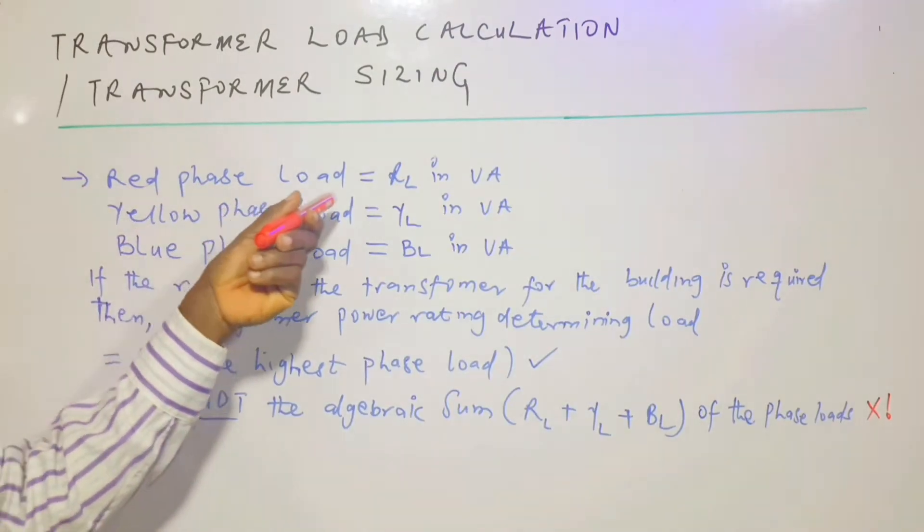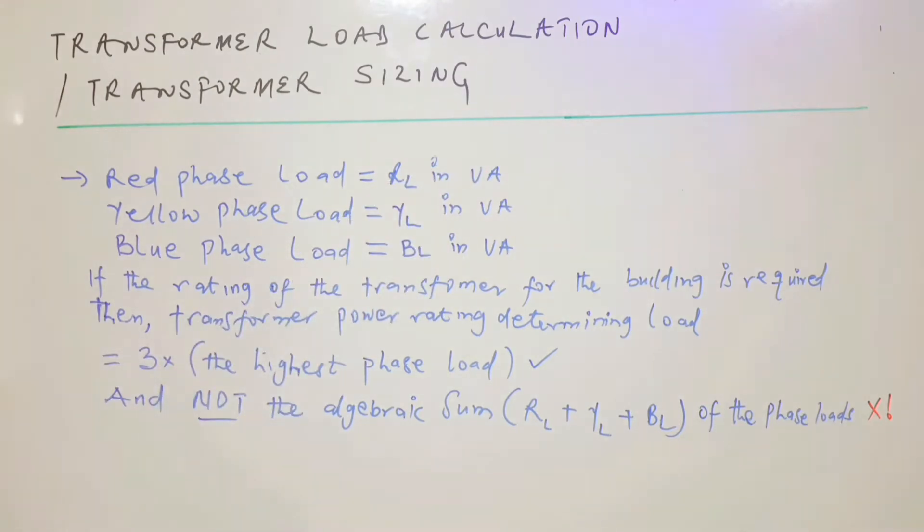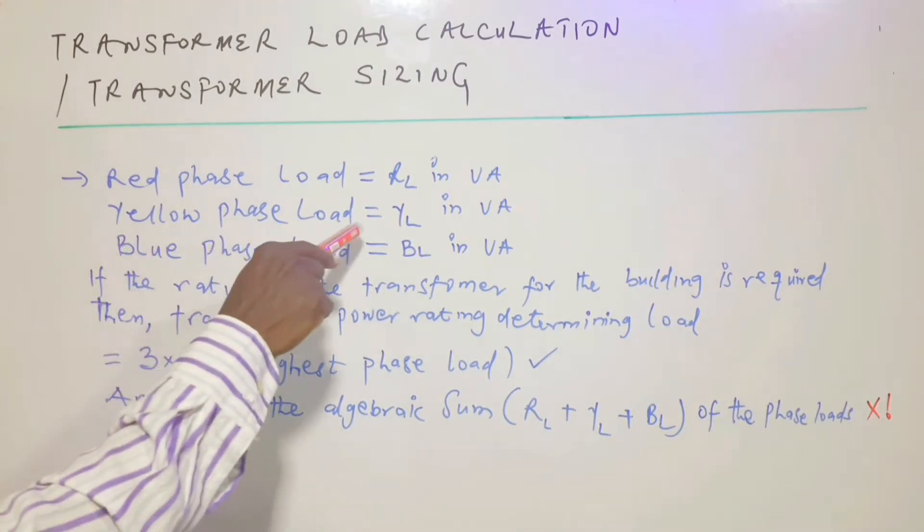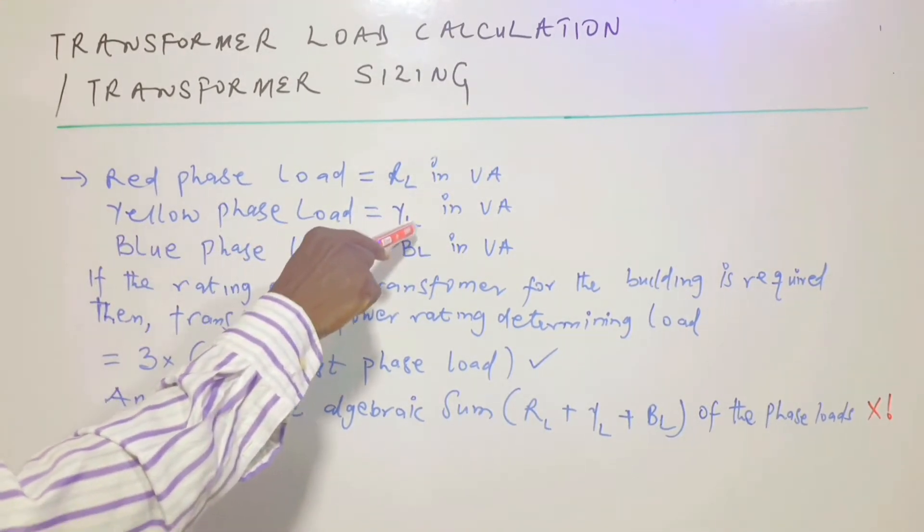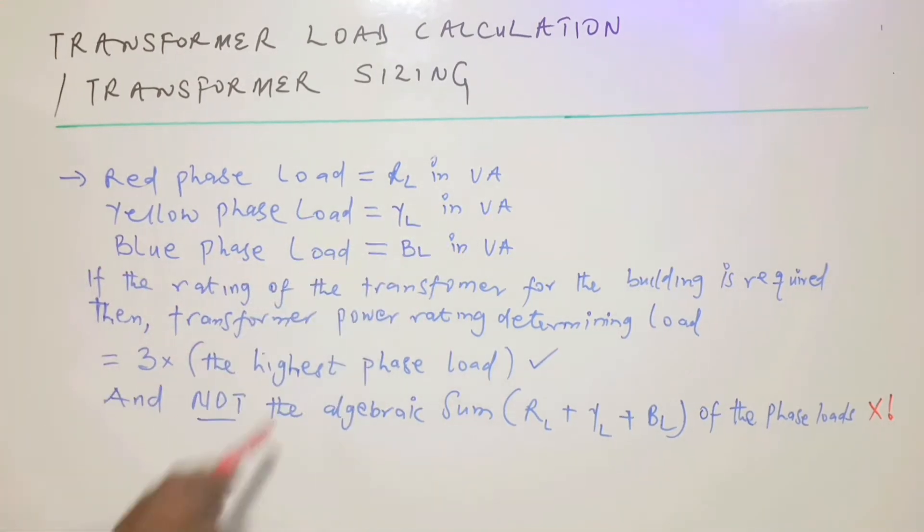The red phase load denoted by RL is in VA, and the yellow phase load denoted by YL is also in VA. The blue phase load BL is in VA.